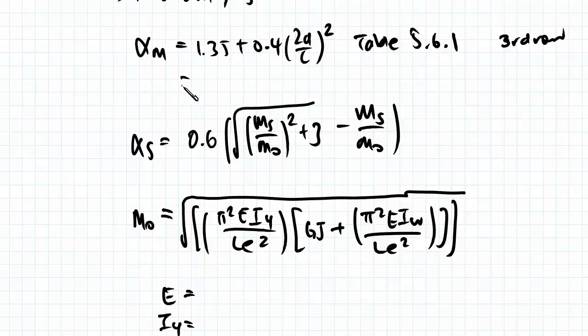So our alpha m is equal to 1.35 because this whole term becomes 0.